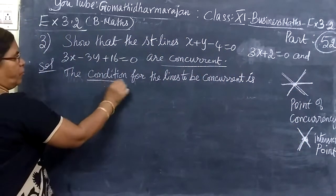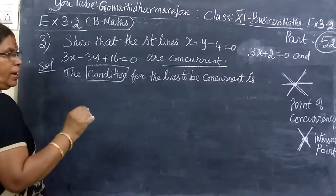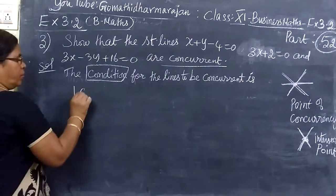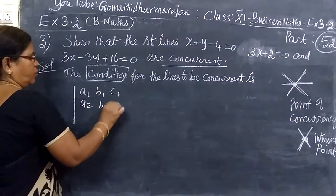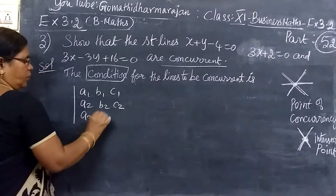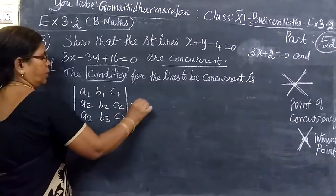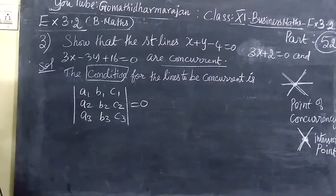So, the condition for the lines to be concurrent is the determinant of A1, B1, C1, A2, B2, C2, then A3, B3, C3 equal to 0.